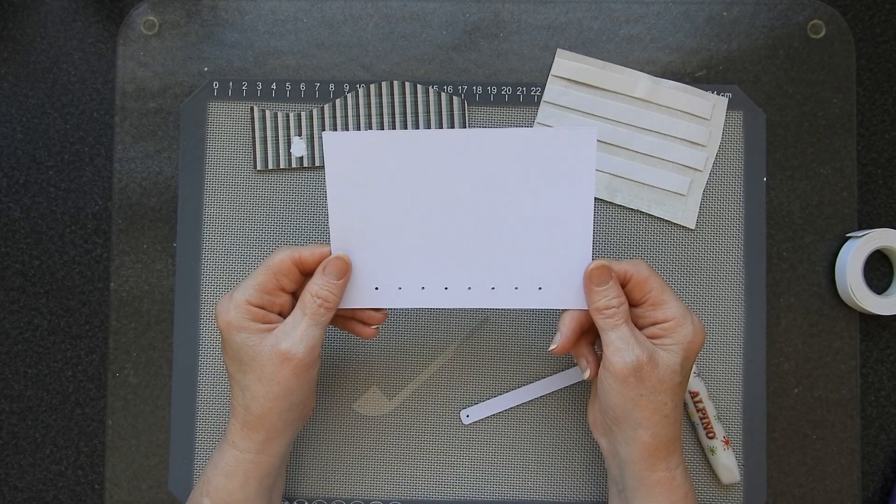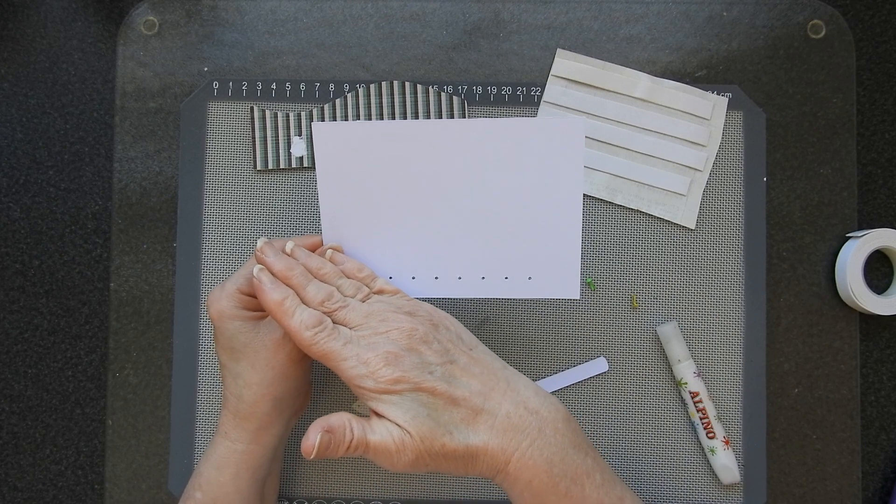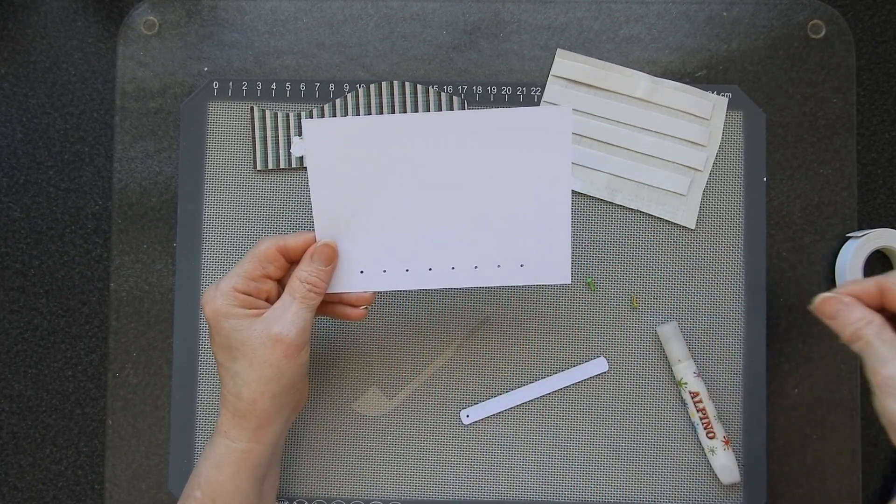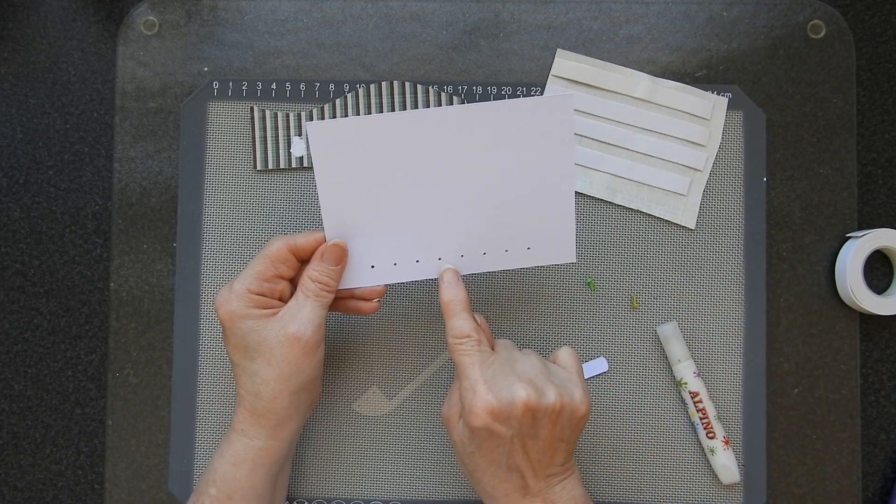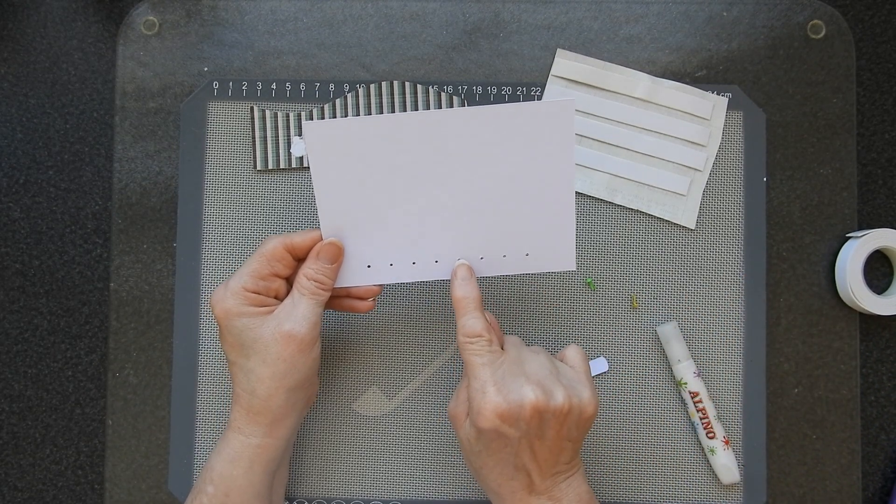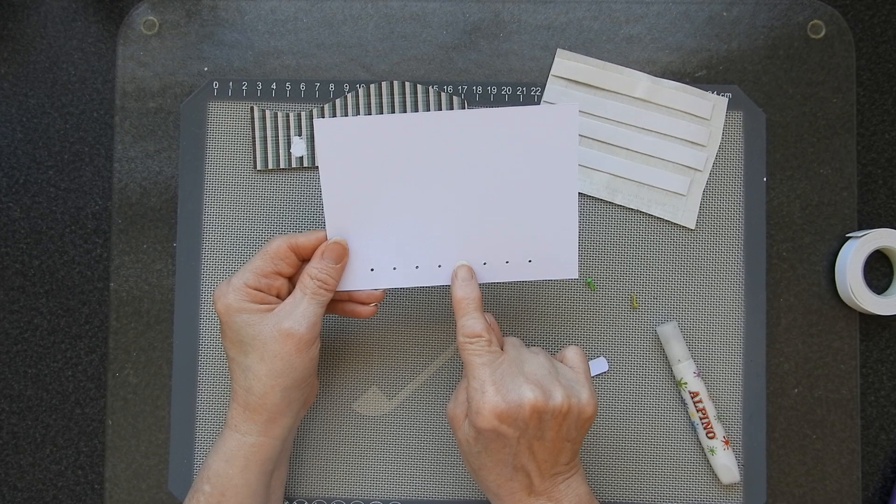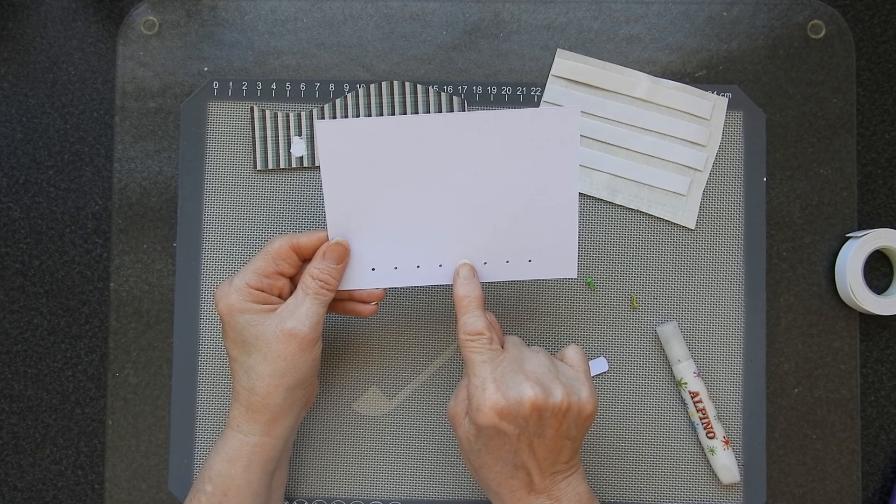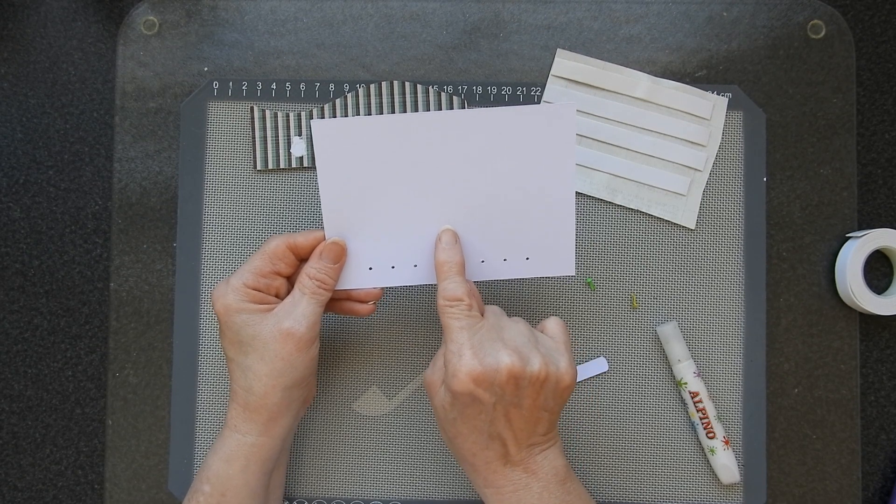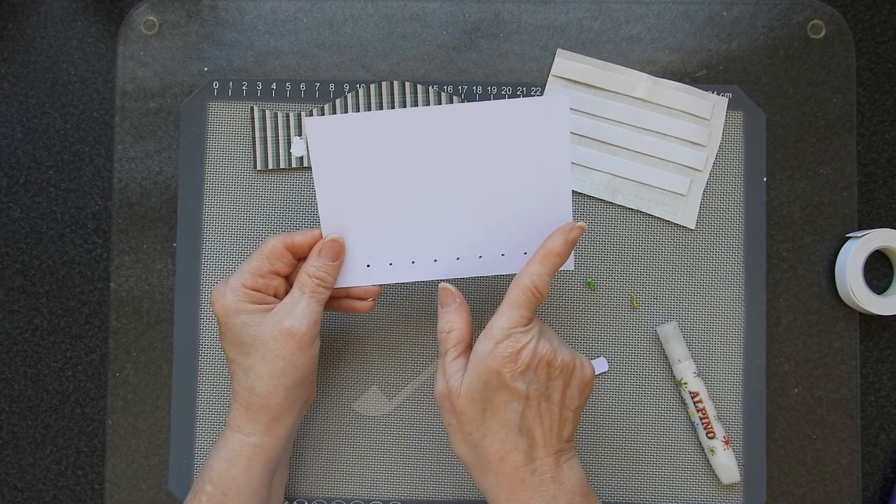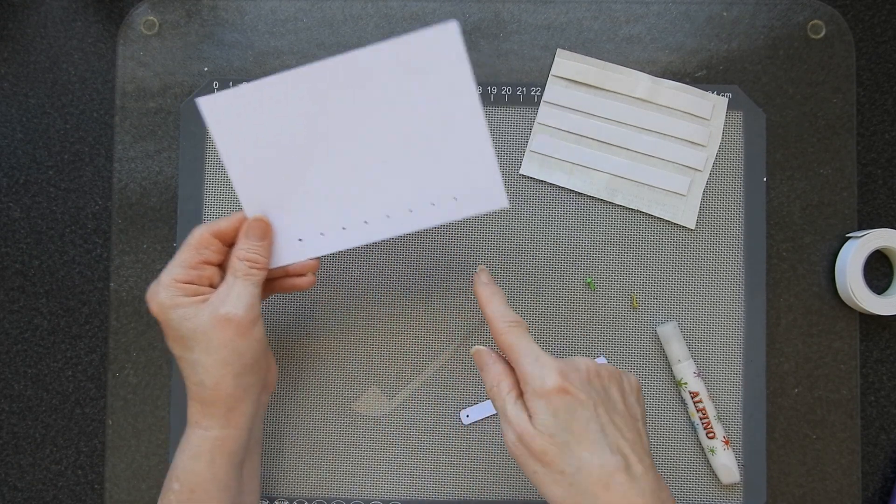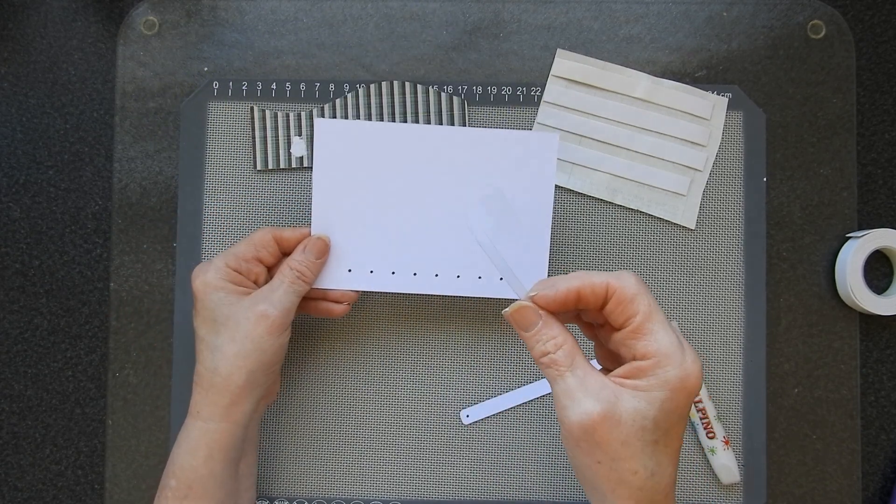If you want your wipe to go from left to right when you pull out, then you need to make sure that these holes are about a centimeter up from the base. If you want it to go in the other direction you can have them higher up and then it will go in the other direction because you'll be using a different hole on here.